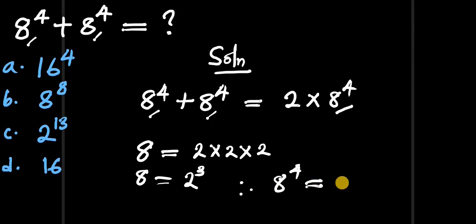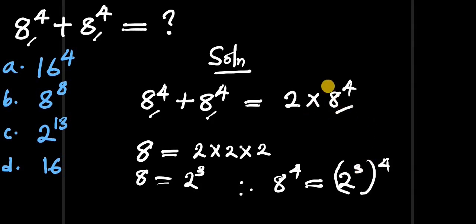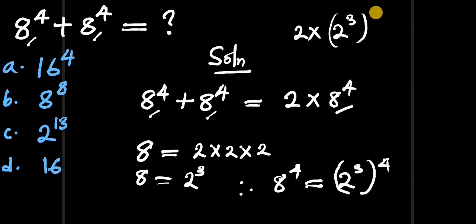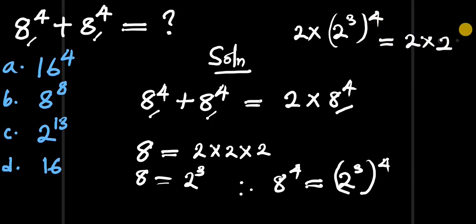Therefore, 8 to the power of 4 is simply equal to 2 to the power of 3, all to the power of 4. So instead of 2 times 8 to the power of 4, we now have 2 times (2 to the power of 3) all to the power of 4. With a problem like this, you simply multiply the exponents: 3 times 4 is 12, giving us 2 times 2 to the power of 12.